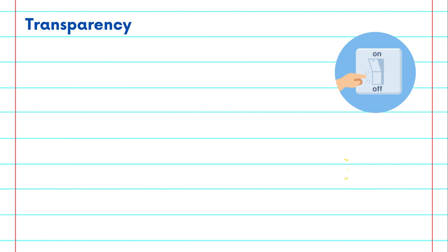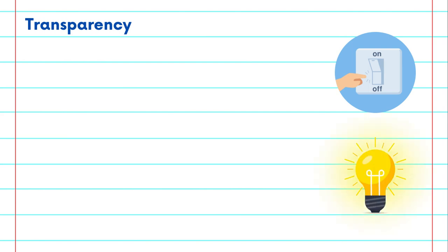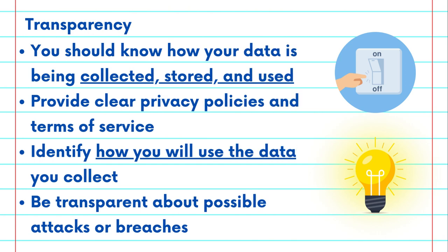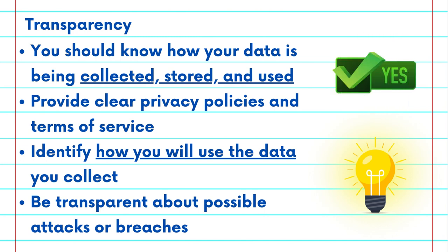Next, let's talk about transparency. This is like turning on the lights and seeing what's happening inside your digital world. When you visit a website or use an app, you should know how your data is being collected, stored, and used. Transparent companies provide clear, easy-to-understand privacy policies and terms of service. So before you click 'I agree,' take a moment to read and understand what you're agreeing to.